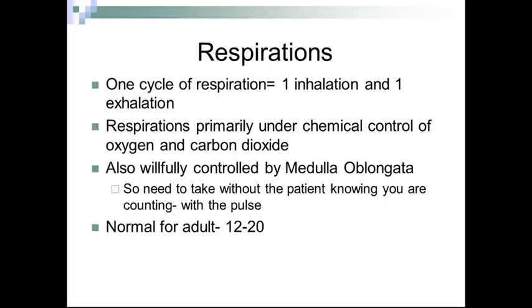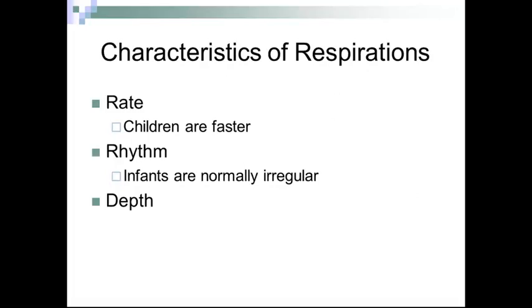The normal adult respirations are 12 to 20 per minute. Characteristics of respirations include rate — children breathe faster, along with having a faster pulse. Rhythm — infants are normally irregular, and sometimes have sinus arrhythmias where breathing affects the pulse rate. Depth — patients with emphysema may not have respirations as deep as someone without disease.